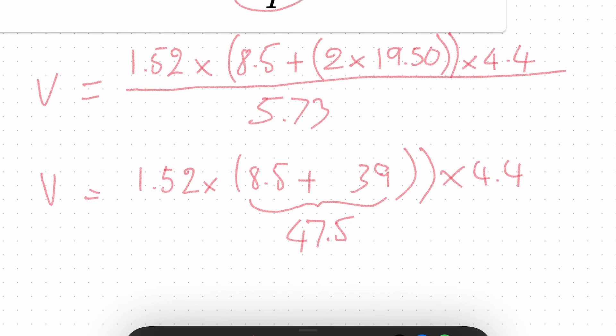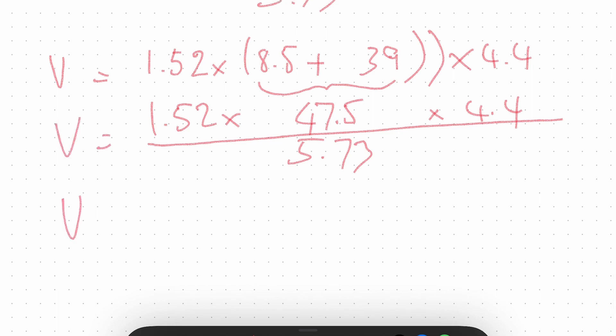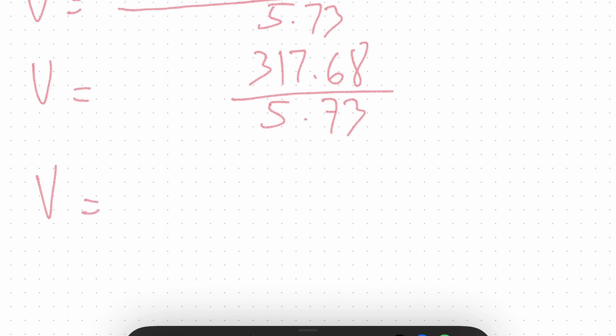All of that multiplied by 4.4, so 8.5 plus 39 is 47.5. 47.5 multiplied by 1.52, multiplied by 4.4, and all of this divided by 5.73. Let's see how much is that. 47.5 times 1.52 equals... 47.5 times 4.4 equals...